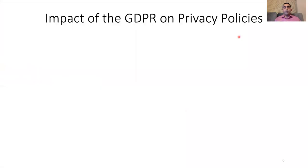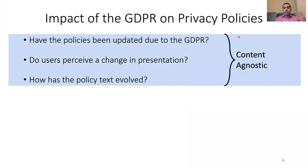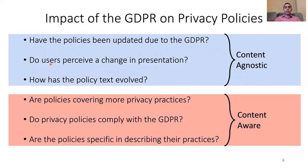To study how privacy policies have changed, we focus on two sets of questions. The first set is content agnostic, covering the timelines of privacy policy updates, the change of users' perceptions of privacy policies, and the evolution of textual features. Then we look at content-aware aspects, covering three questions: are policies doing a better job at covering major topics of privacy? Are policies including the detailed information required by the GDPR? And are they being explicit — or ambiguous — about their privacy practices?